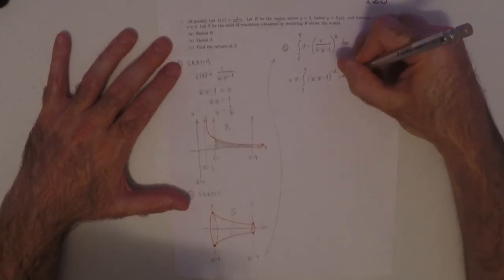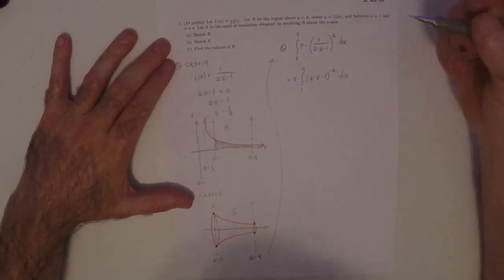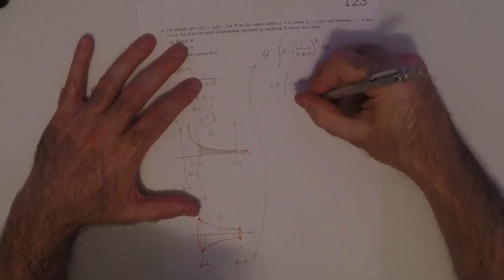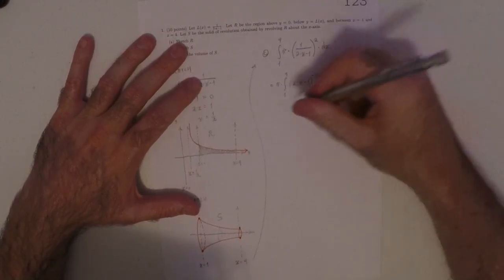And then the most convenient way to write that is probably 2x minus 1 to negative 2. Like so. A substitution may help. So I'll do the substitution, w is equal to 2x minus 1.